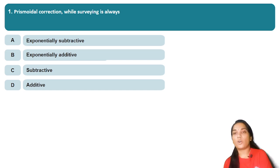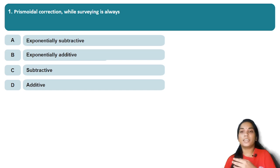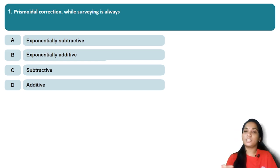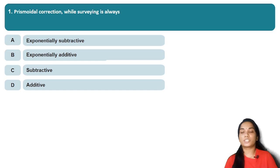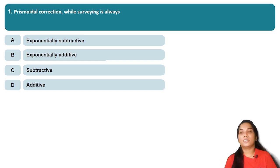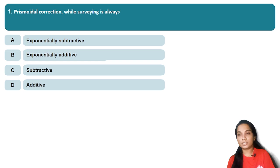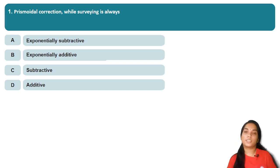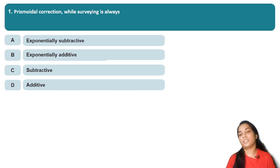The Trapezoidal method gives an overestimated value. We will calculate the value and get to the Prismoidal correction, which will be a little more accurate.